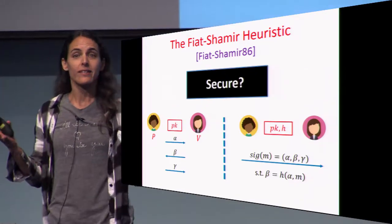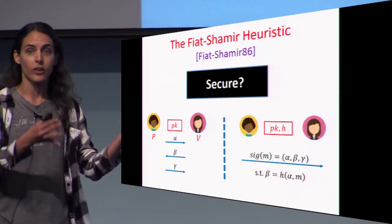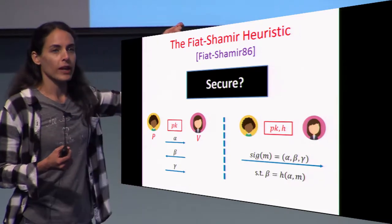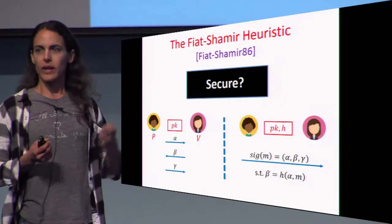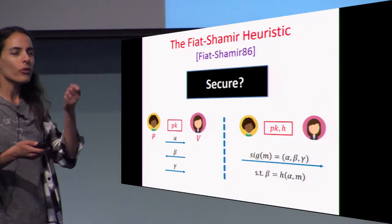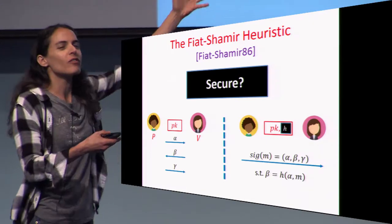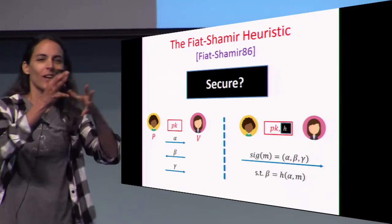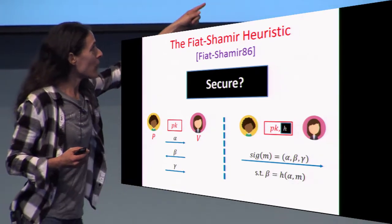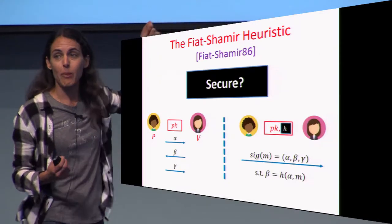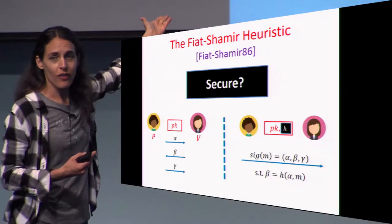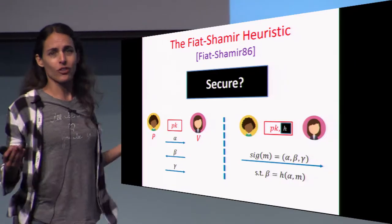The main question is: is it secure? If you start with a secure ID scheme, do you get a secure signature scheme? Let me give you the intuition why it is secure. What can an impersonator who tries to forge a signature do? He gets this hash. Suppose this hash is like a pseudorandom function — essentially random — and moreover, suppose that all the impersonator can do is use this hash as a black box. In this case, generating the transcript alpha, beta, gamma by interacting with a random oracle is really the same as interacting with a verifier in the ID scheme. So if the ID scheme is secure, the signature scheme should also be secure.